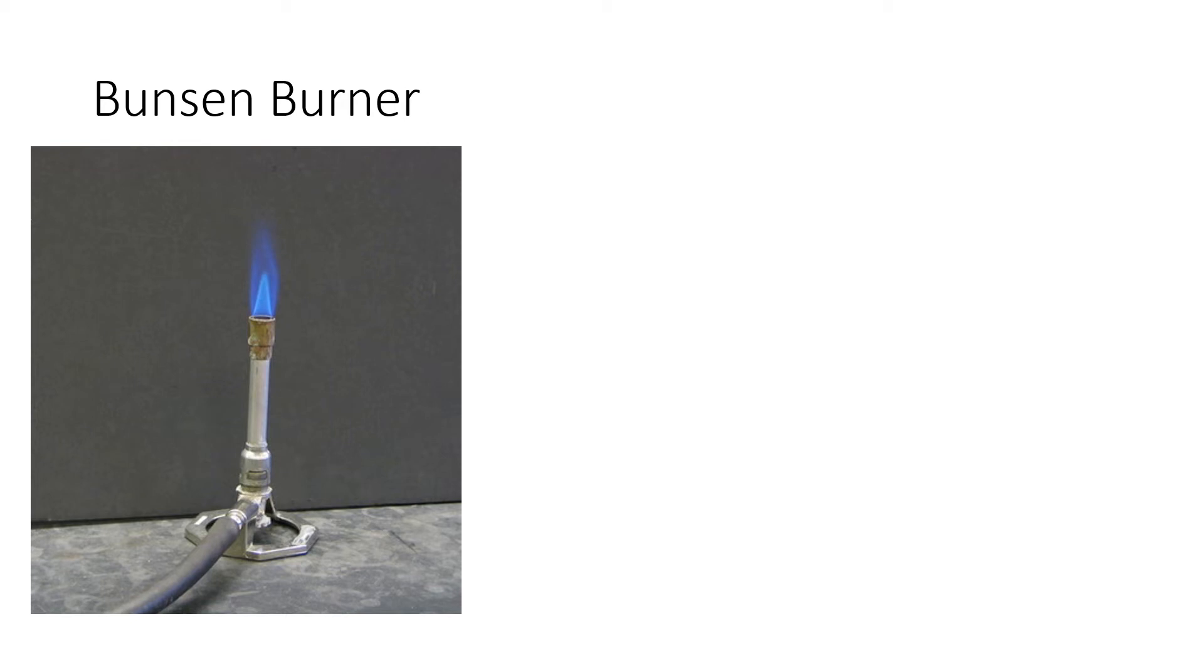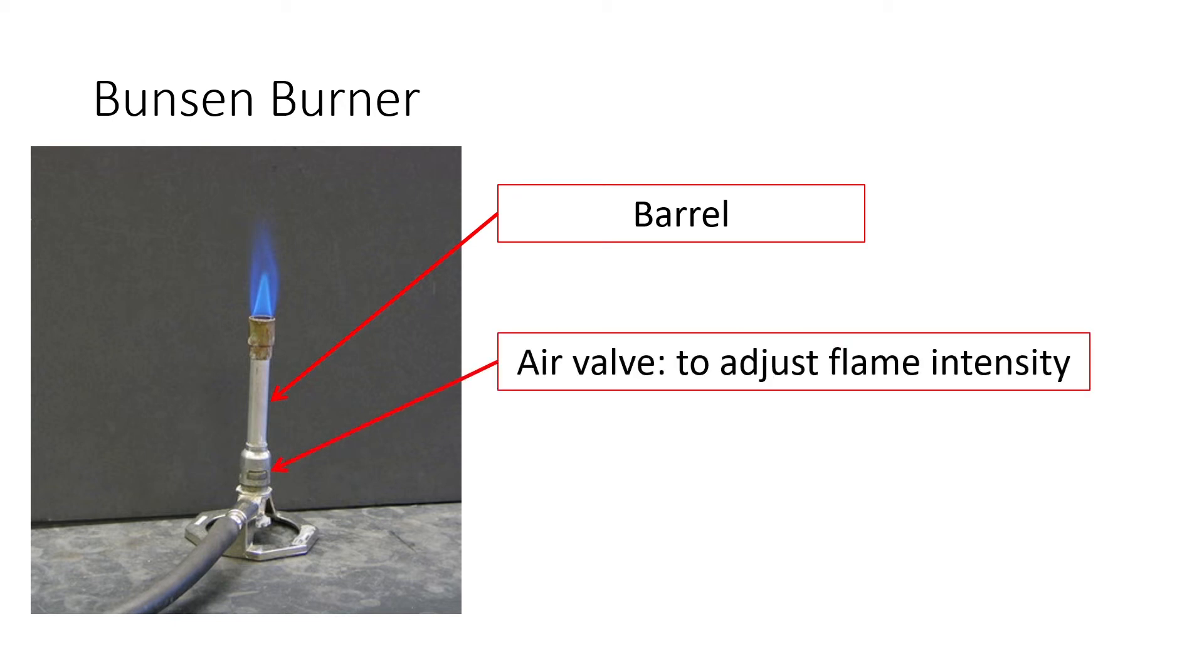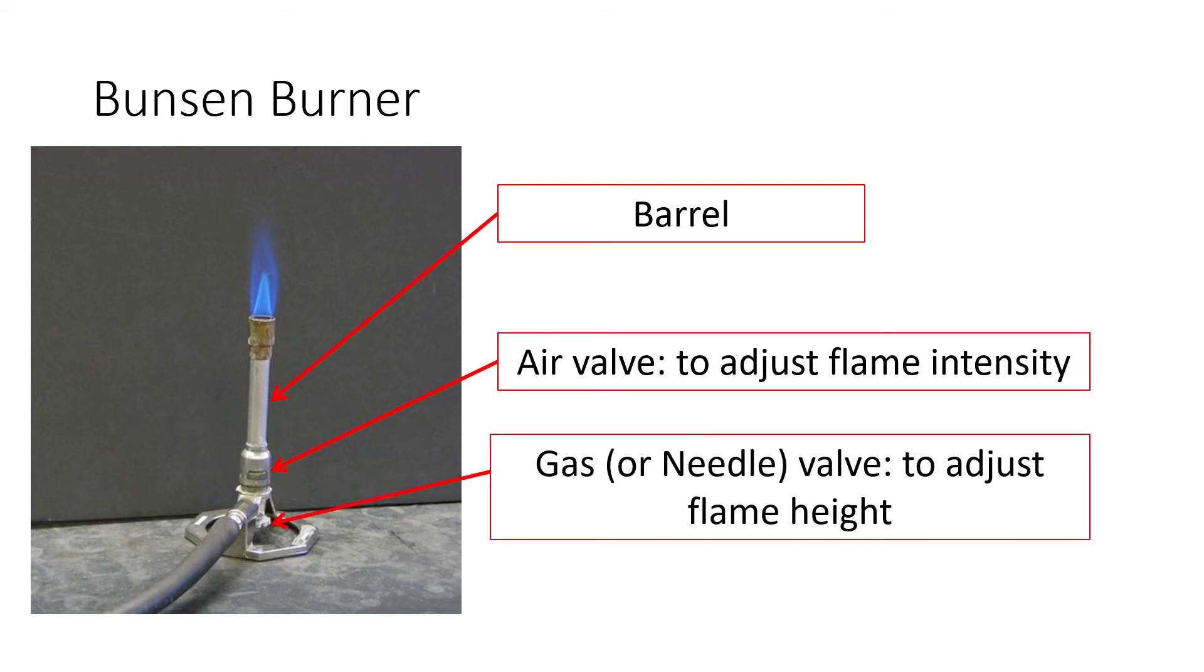To do the reaction we're going to be using some pieces of equipment that you may or may not be familiar with. One of them is the Bunsen burner - one of the preferred methods of delivering heat in the lab. The Bunsen burner has several parts: we call this part here the barrel, we call the little collar here that screws on the base the air valve, and it has little windows so it allows to control the amount of air coming in and therefore adjust the intensity of the flame. In some Bunsen burners, there's an additional control at the bottom of the base called the gas or needle valve, and this one controls how much gas goes in and therefore we use it to adjust the height of the flame.